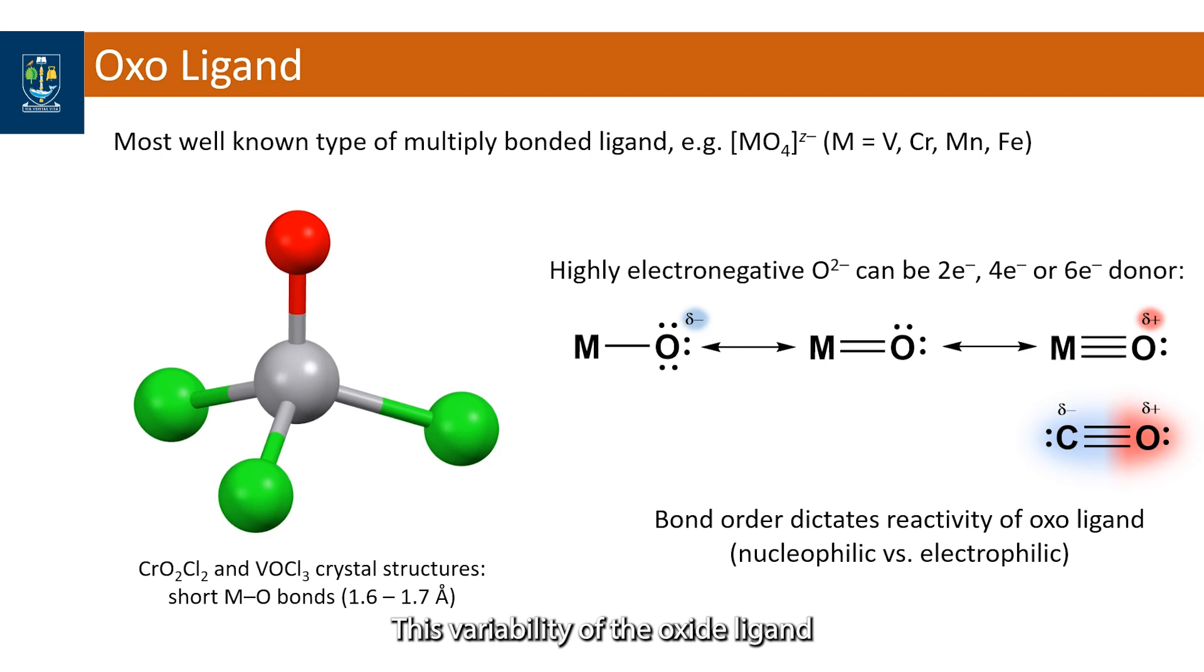This variability of the oxo ligand means we can tune its reactivity depending on the metal iron oxygen to which it's coordinated.